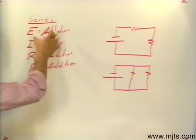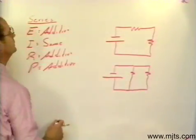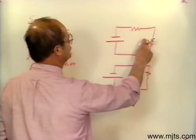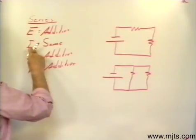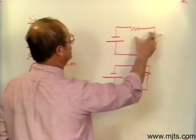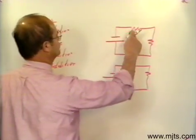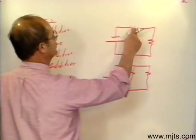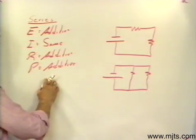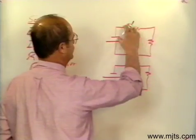In a series circuit, the components are connected in line. The voltage is additive — if I know the voltage drop across each of the resistors I can add them together and I would have the total voltage. The current is the same — if I knew the current in any part of that circuit I would know it throughout. Resistance is also additive — add each resistor's value to get total resistance. Power is additive in any circuit, whether parallel or series.